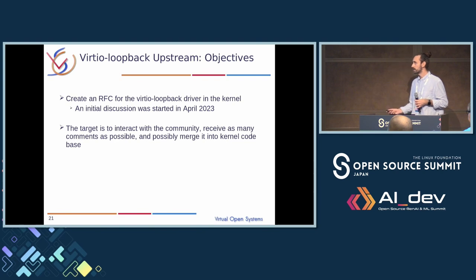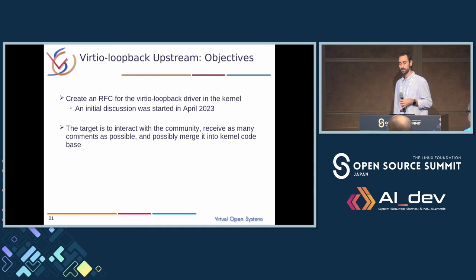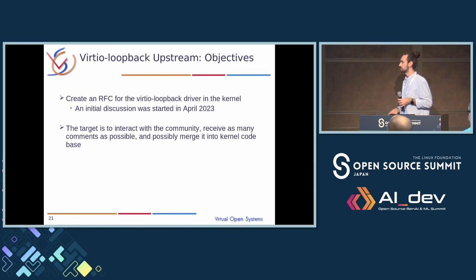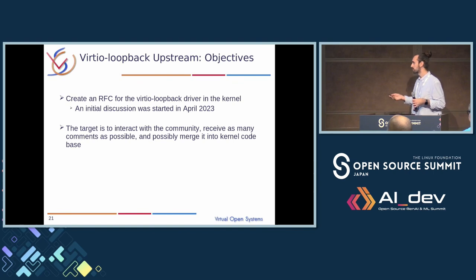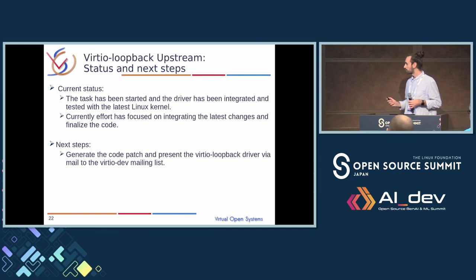The last activity of this year is to create an RFC to the VirtIO mailing list and present the VirtIO Loopback driver. An initial discussion was started in April 2023 when we shared the idea and design documents with the community. We received questions regarding the comparison of VirtIO and VirtIO Loopback. This year we plan to share a patch for the latest kernel to receive comments, which leads to updating the driver and addressing open questions about its validity.